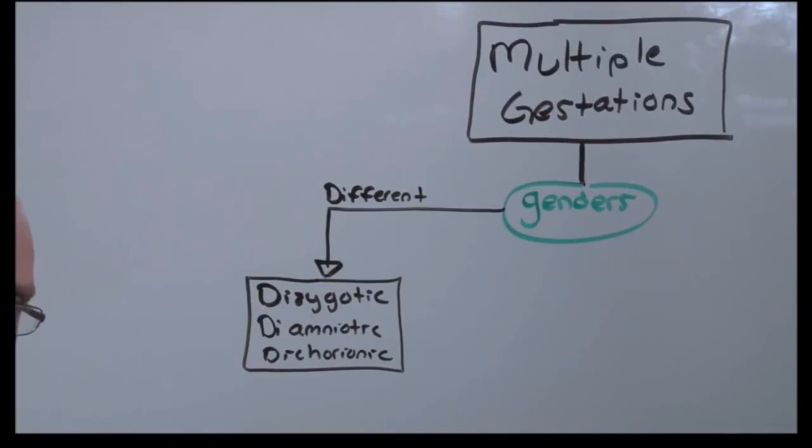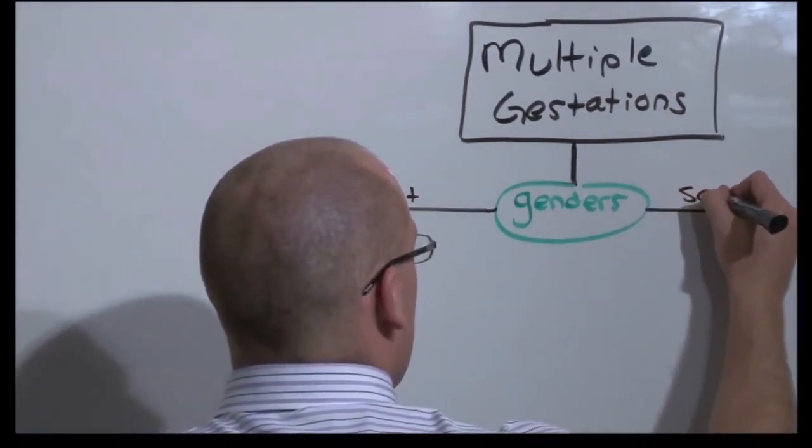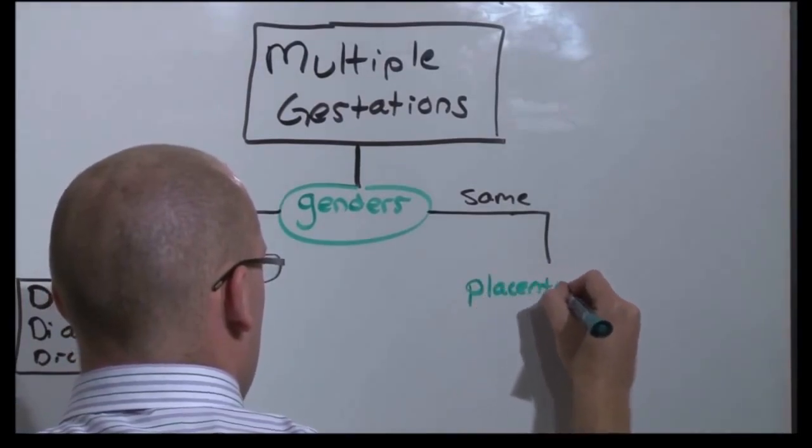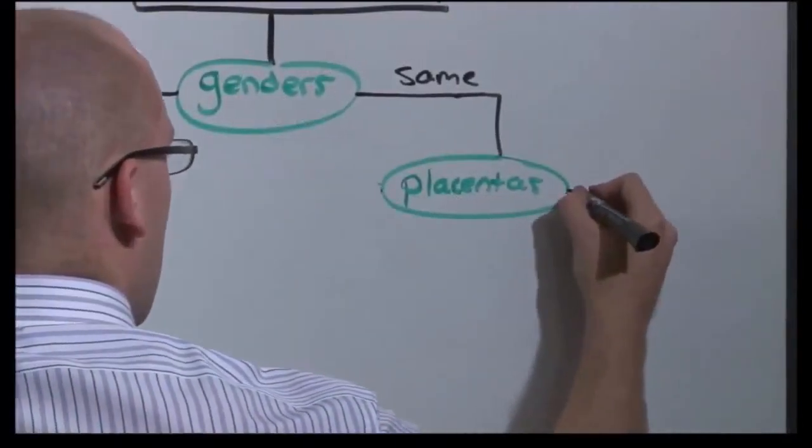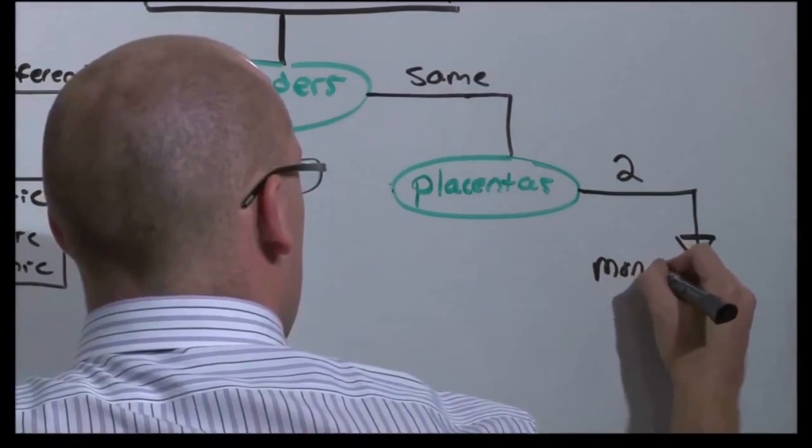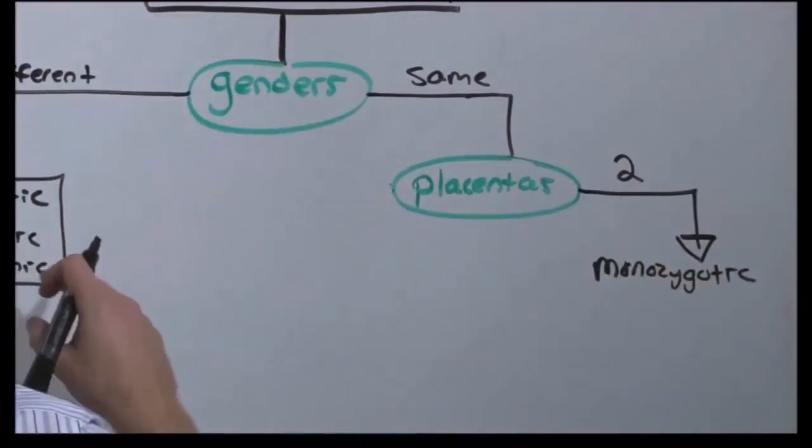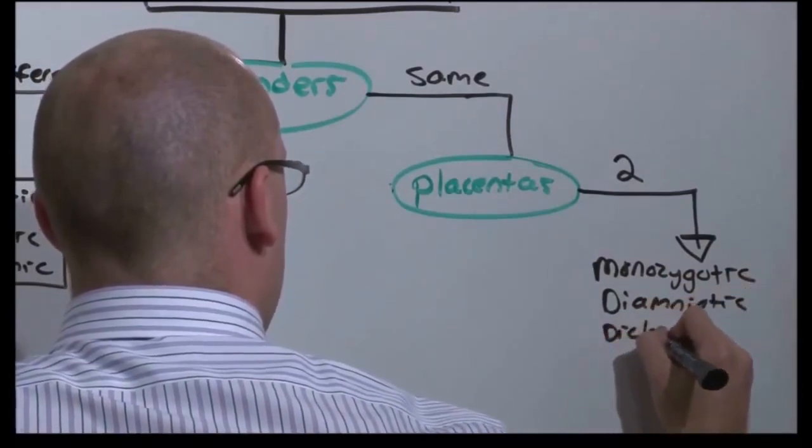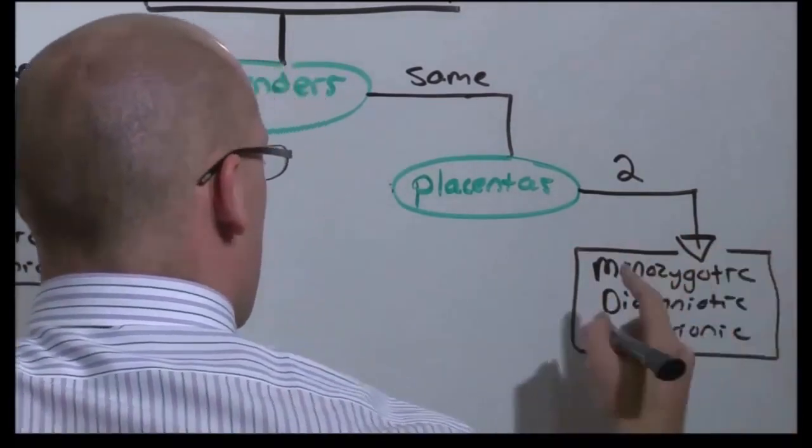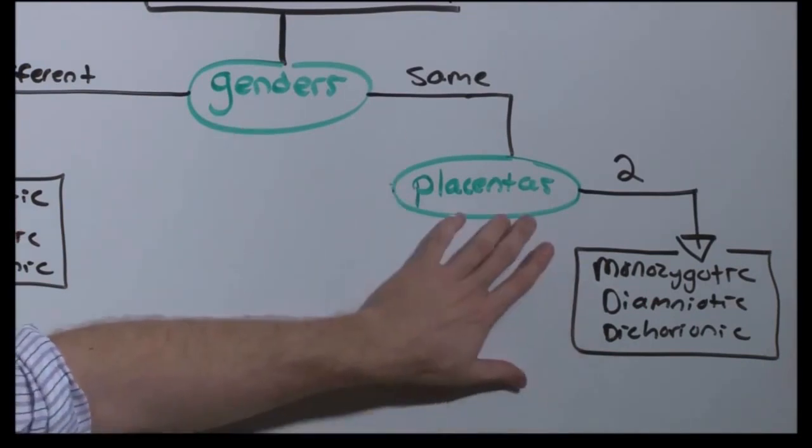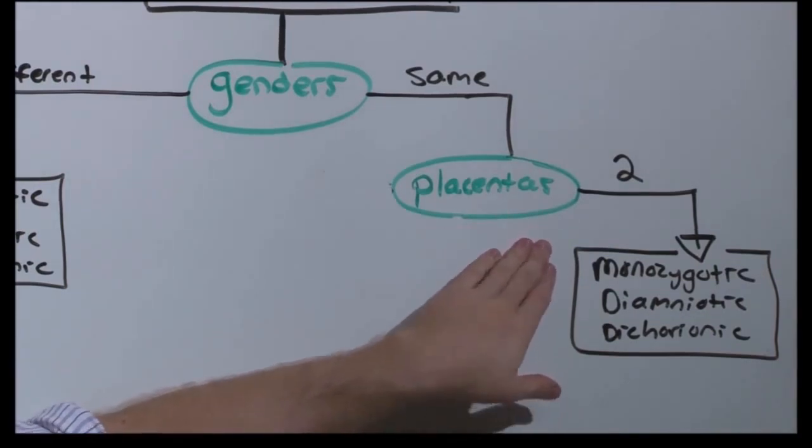But if the genders are the same, it's very difficult to tell non-identical twins from identical twins. If the genders are the same, the next step is to look at the number of placentas. If there are more than one placenta, it's very difficult to tell the difference between a monozygotic identical twin from a dizygotic non-identical twin because you'll have diamniotic dichorionic. It looks like two different pregnancies occurring at the same time. So if they're the same gender, you won't know if there are monozygotic identical twins or dizygotic non-identical twins until they come out.